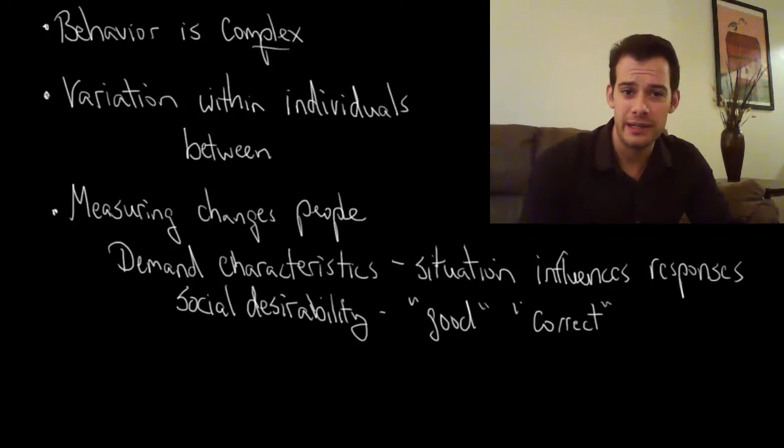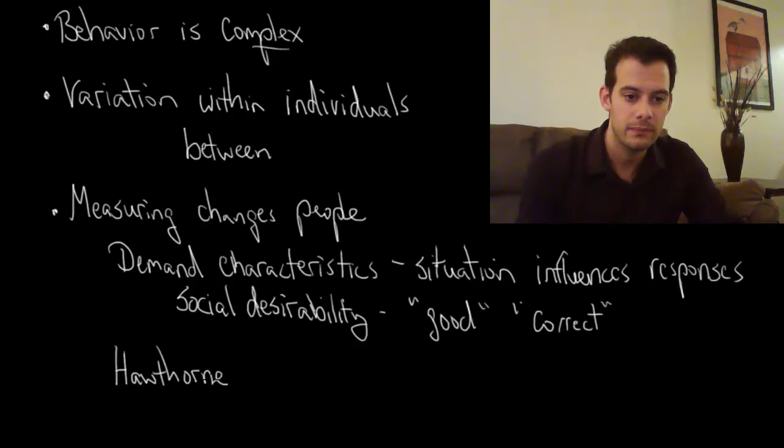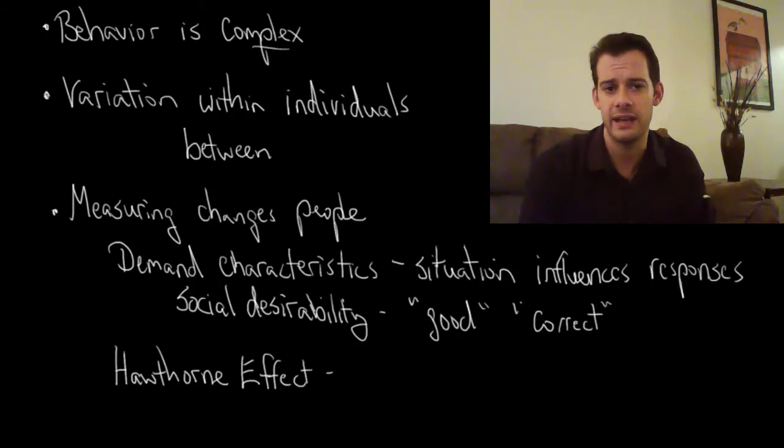We also see how measuring can change people in what's known as the Hawthorne effect. And this comes from a place known as the Hawthorne Works, and this was a western electric factory outside of Chicago. And in the 1920s and 1930s some researchers did some studies on worker productivity.